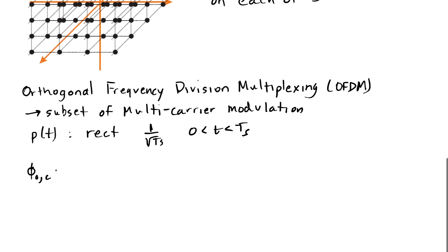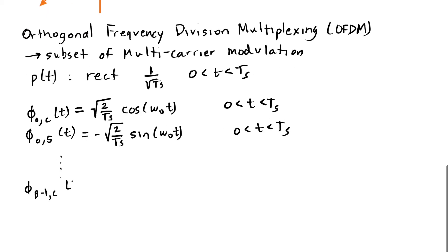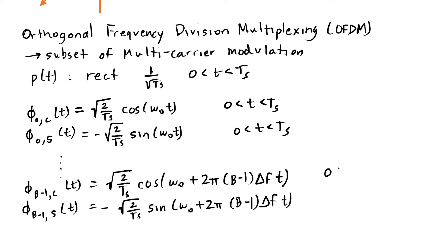My basis functions now become as follows. All of these basis functions are the same, except now we're multiplying a constant 1 over square root of Ts by the square root of 2 and the cosine, or minus square root of 2 and the sine. I'm going to skip the function index 1 here and just go from 0 all the way to B-1 for each of the capital B different subcarriers.